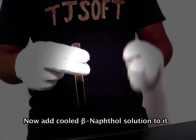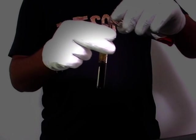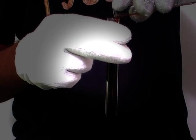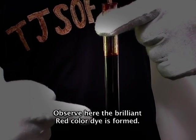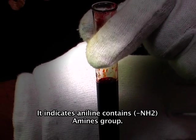Now add cold beta-naphthol solution to it. Observe that a brilliant red colored dye is formed. This indicates aniline contains amine groups.